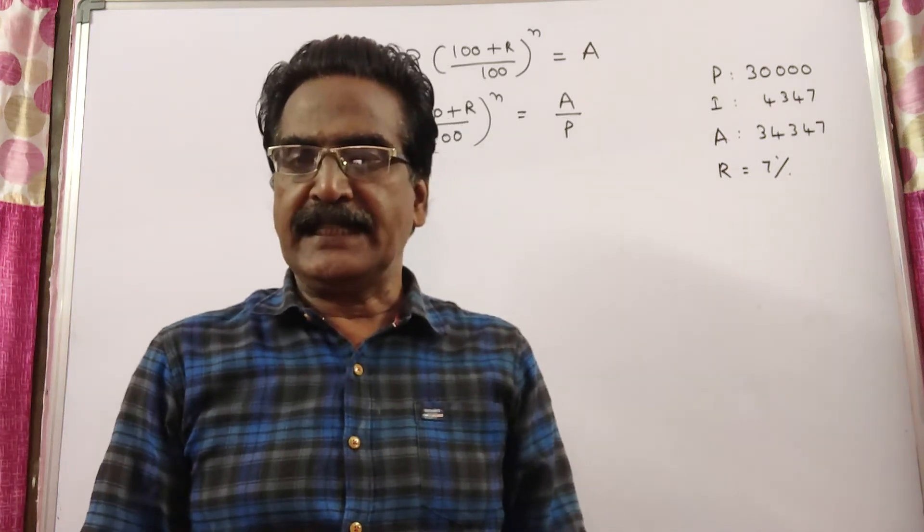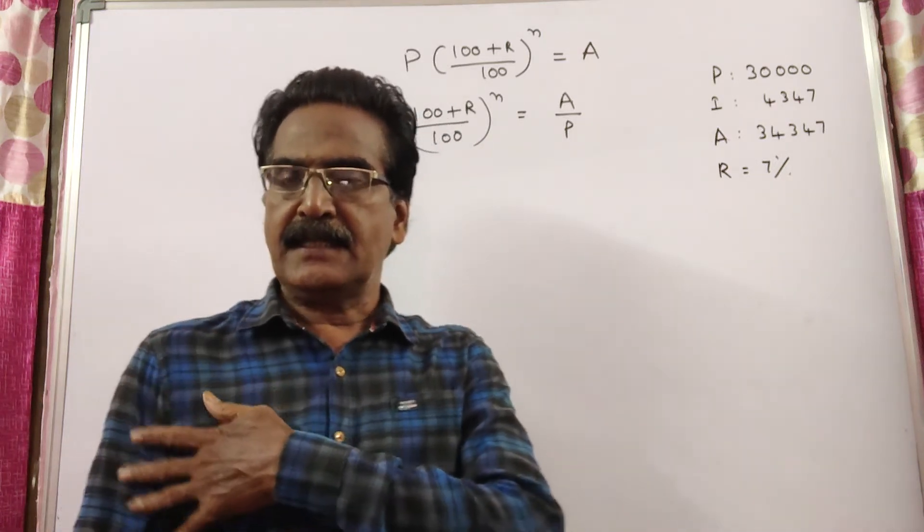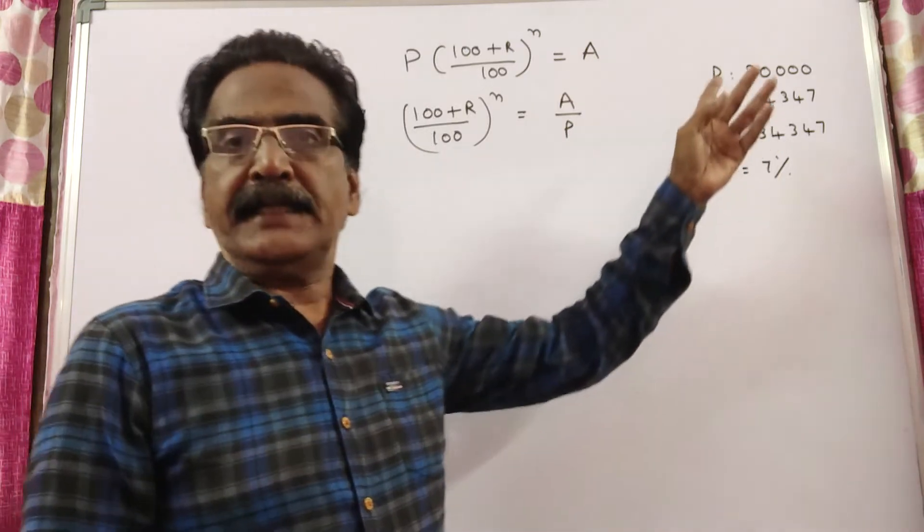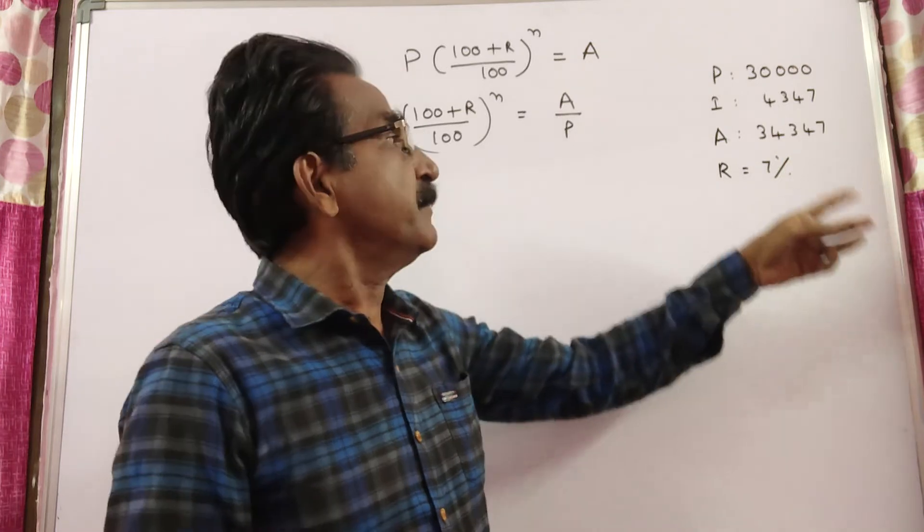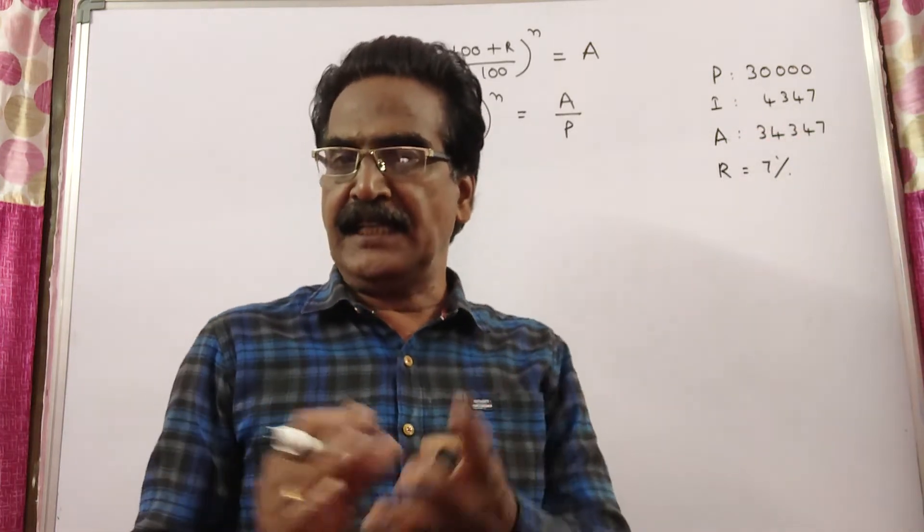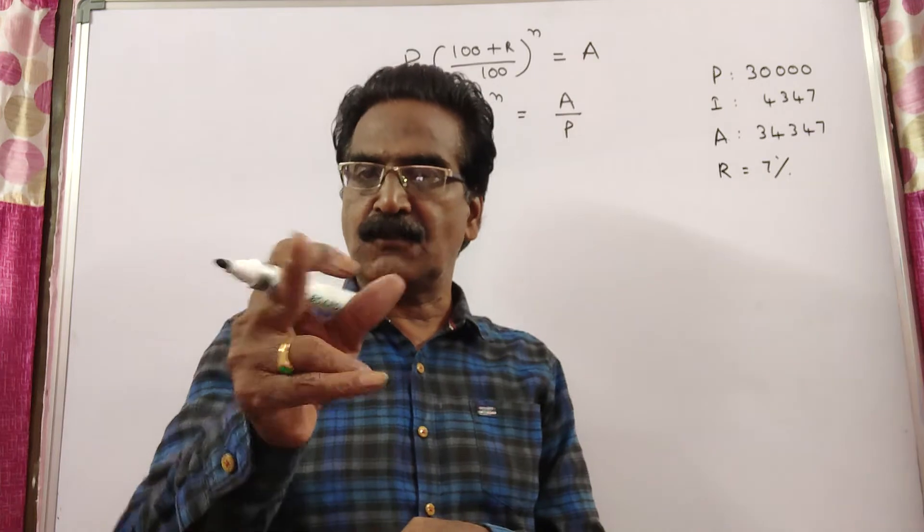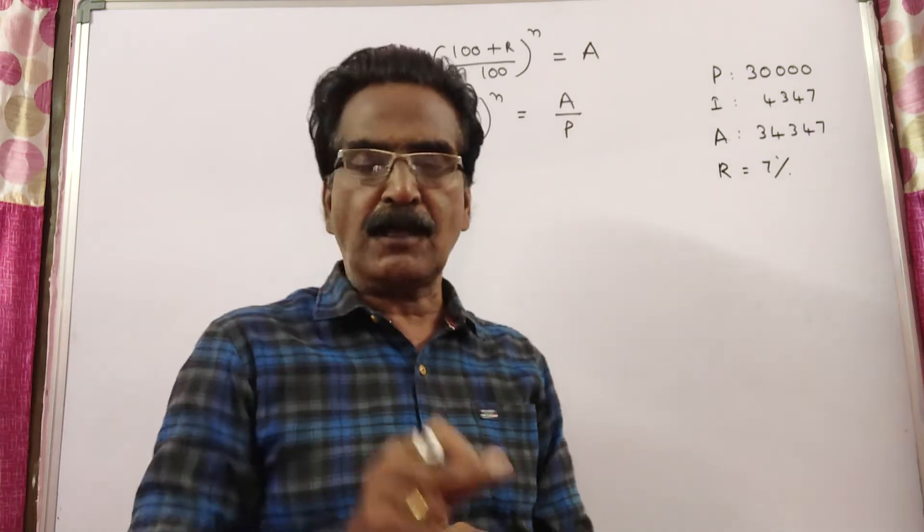Hi friends, good morning. Please look at the next problem in compound interest. The compound interest on Rs 30,000 at 7% per annum is 4,347. Find the period. The question is also given in the description box.